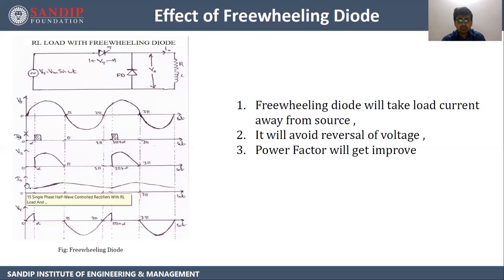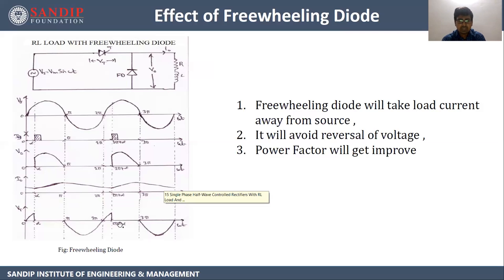The output current waveform when the freewheeling diode is connected is almost linear but not exactly linear, because we are not connected to a thyristor. If connected to a thyristor, we would get a straight or pure DC current. The drop across the thyristor is what remains when we subtract the output voltage from the input.